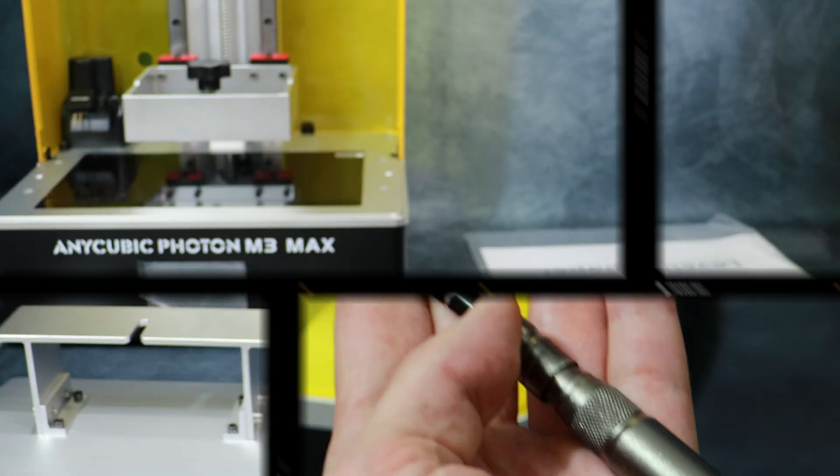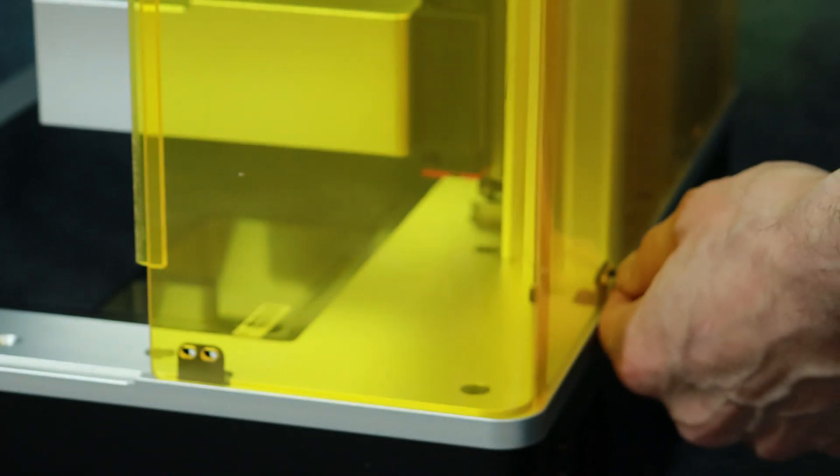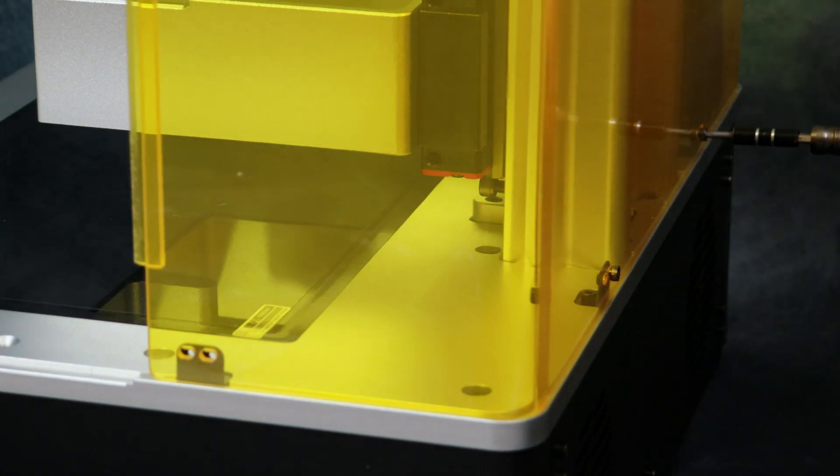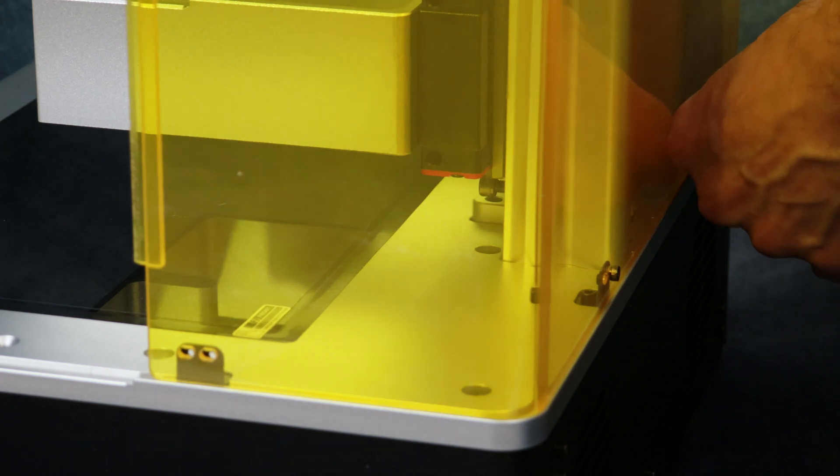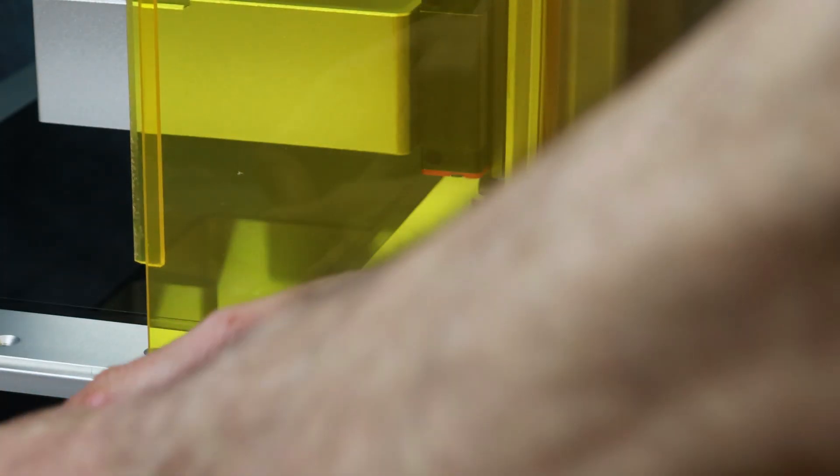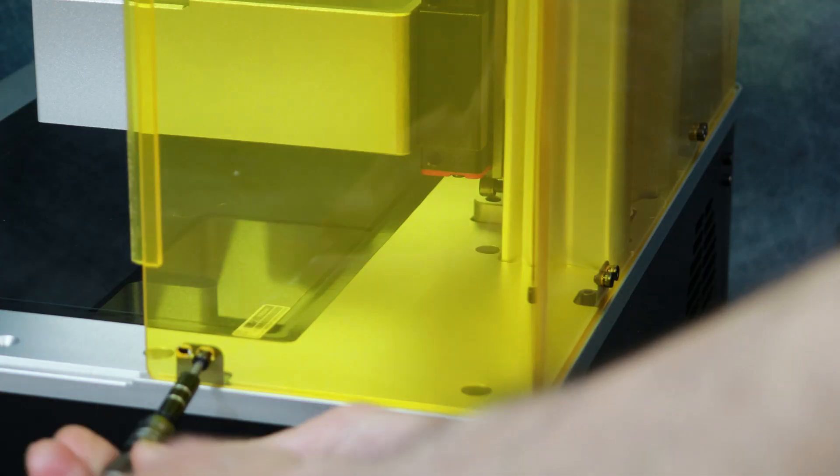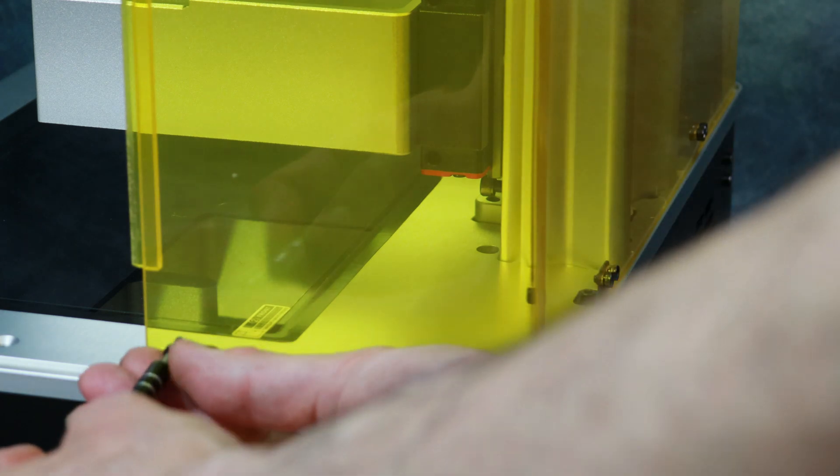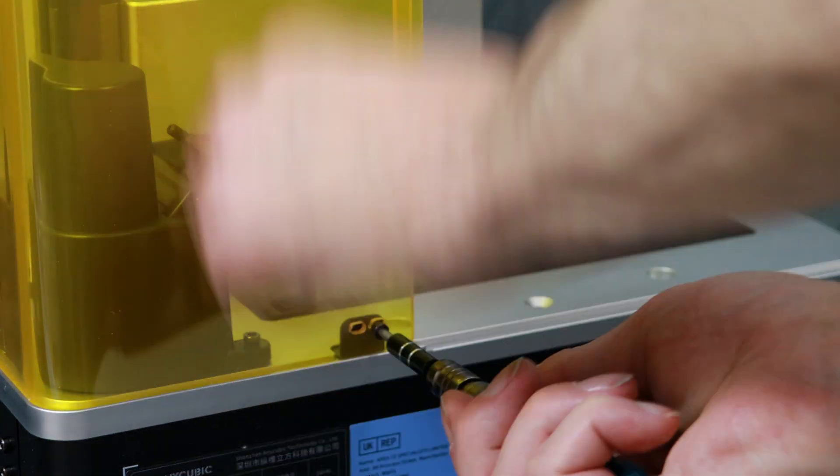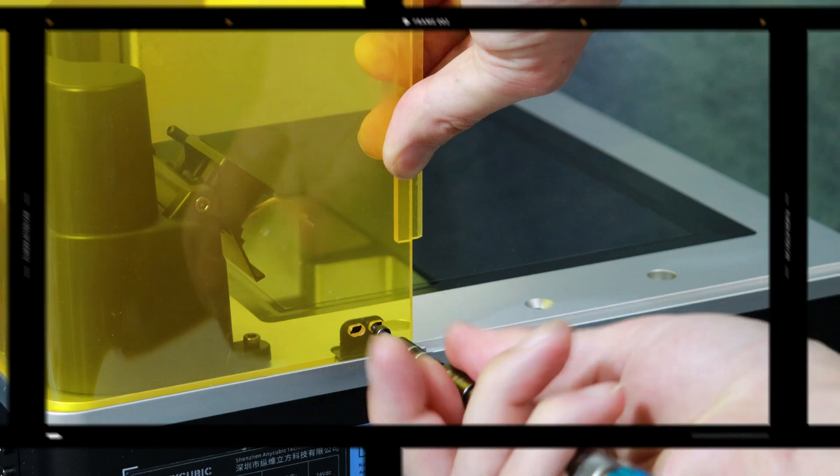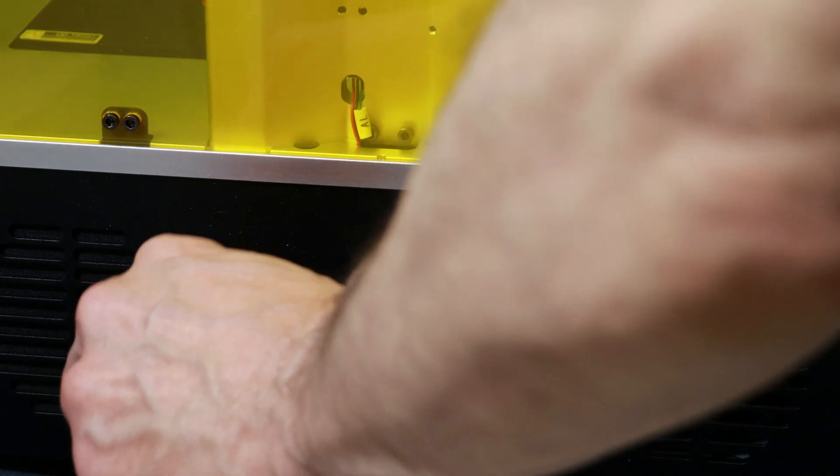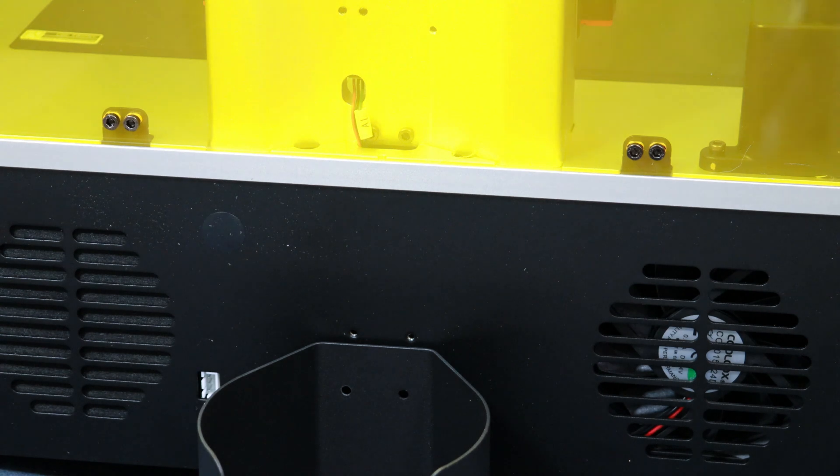Next thing we're going to do is install the screws on the back panel of the printer. Once we have the back cover installed we can go ahead and install the bottle holder on the back of the printer which holds the bottle for the auto refill system. This is pretty easy there's just three screws here.